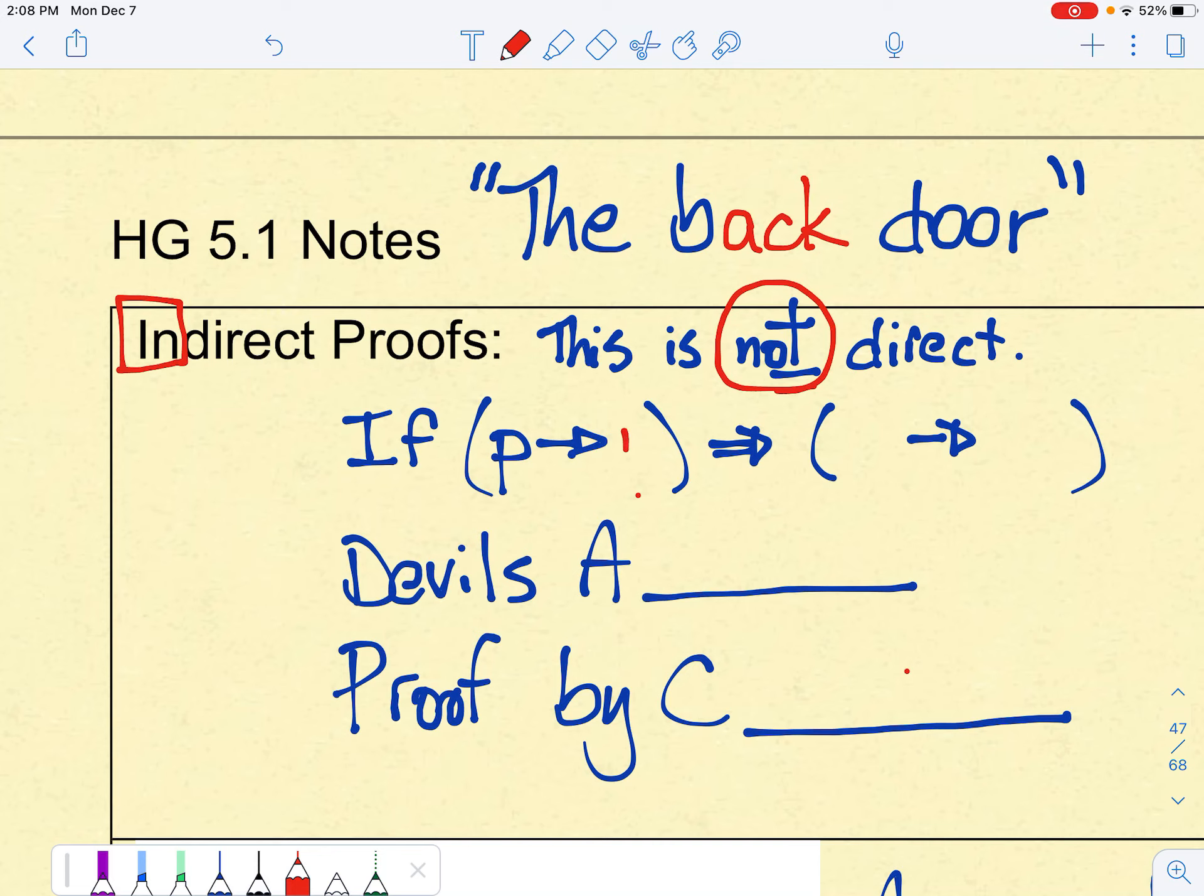Remember we have that rule from back in first trimester. It's called a contrapositive, that if you know this conditional to be true, then you can also negate the conclusion and end up with the negation of what you begin with.